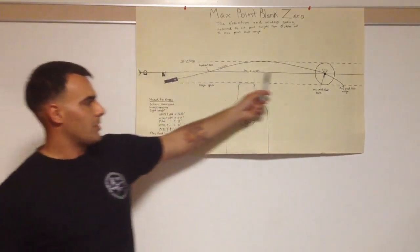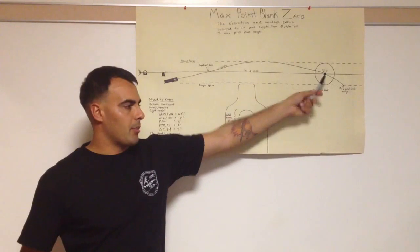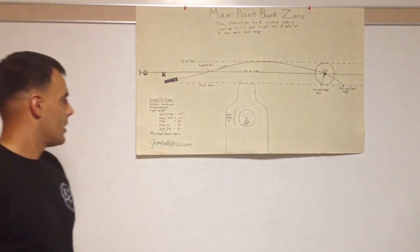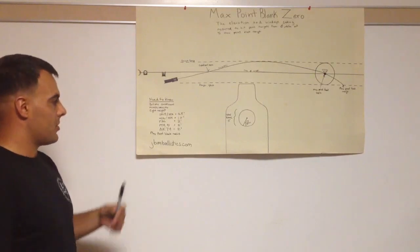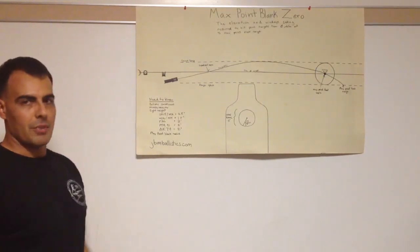Our line of sight is always directly on our aiming point, so we're not using any holdovers. Go to jbmballistics.com, use one of their calculators, and you can find out the max point blank range for your rifle.